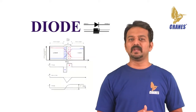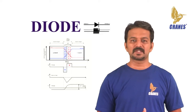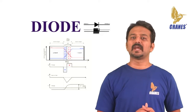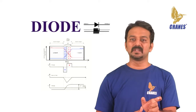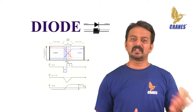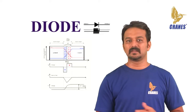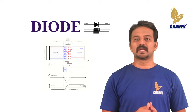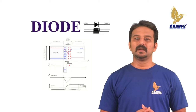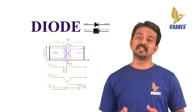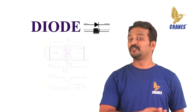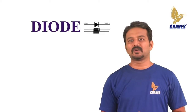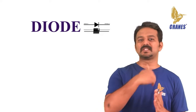After the formation of the depletion region, there is no more diffusion of charge carriers from one side to the other inside the diode. This is due to the electric field appearing across the depletion region, which prevents further migration of charge carriers. The potential of the uncovered positive ions in the n-type side repels the holes in the p-type side, and the potential of the uncovered negative ions in the p-type side repels the free electrons in the n-type side. This means a potential barrier is created across the junction to prevent further diffusion of charge carriers.